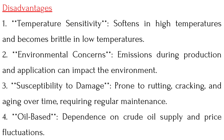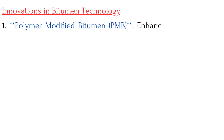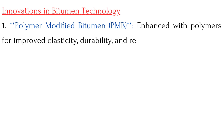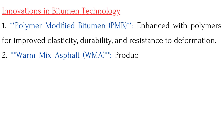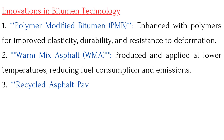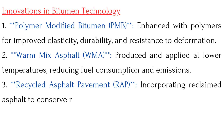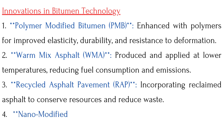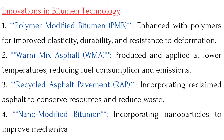Environmental impact and mitigation: Emissions during production and application release greenhouse gases and volatile organic compounds. Mitigation strategies include the use of warm-mix asphalt to reduce production temperature and emissions, and incorporation of recycled materials like reclaimed asphalt pavement. Innovations include Polymer Modified Bitumen for improved elasticity and durability, Warm-Mix Asphalt produced at lower temperatures, Recycled Asphalt Pavement to conserve resources, and Nano-Modified Bitumen incorporating nanoparticles to improve mechanical properties and longevity.